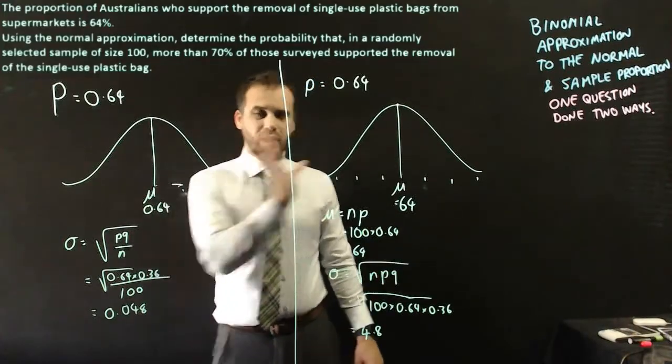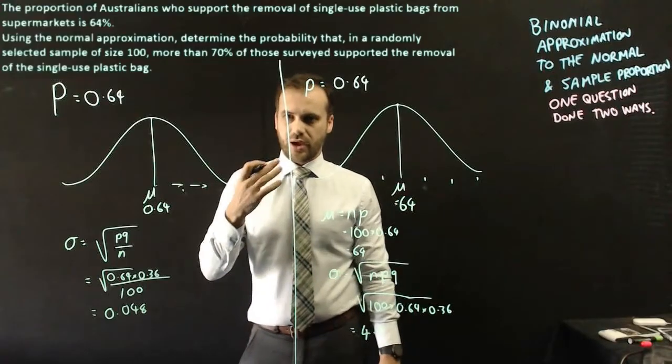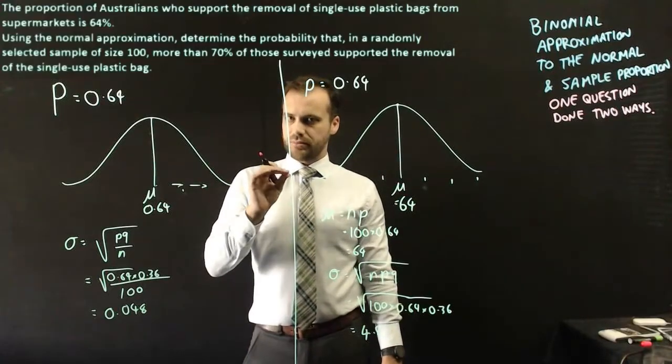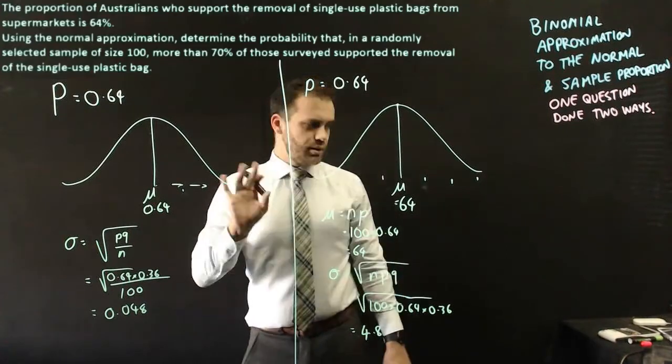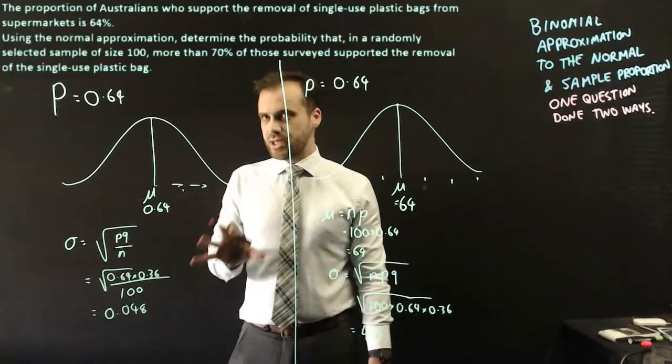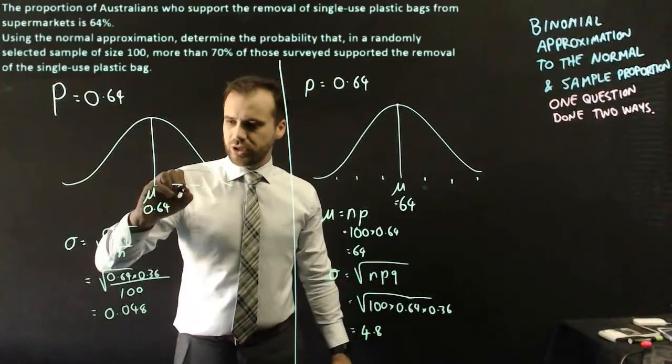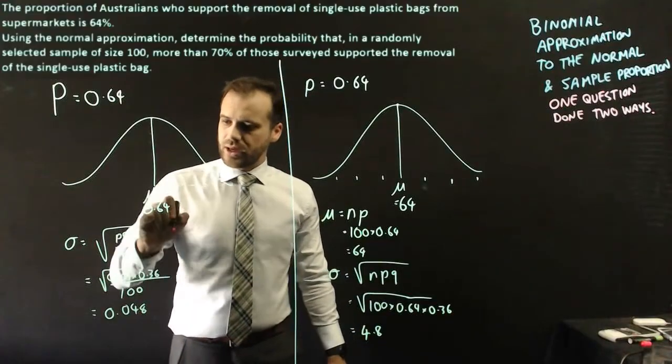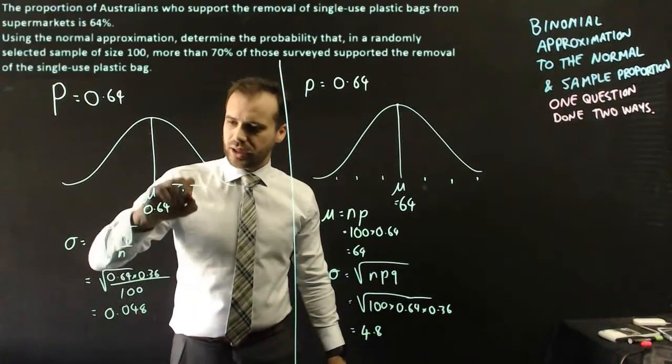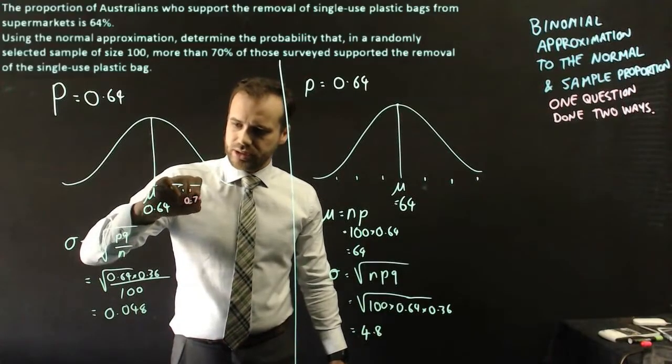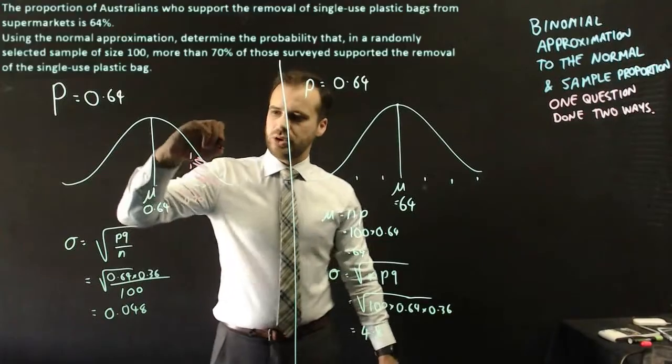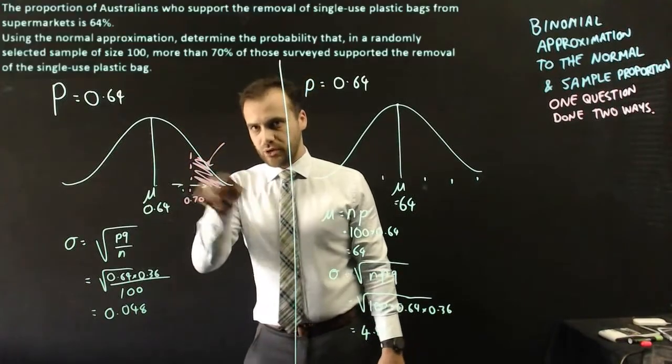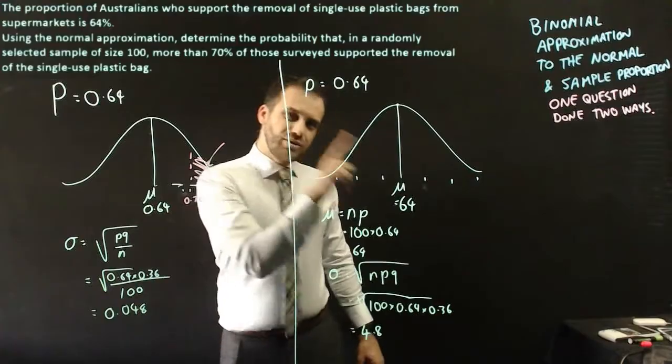Now, we're trying to find the probability that more than 70% of people approve of this, approve of removing the bags. In this one, it's relatively easy. We're trying to find the probability that the proportion is greater than 0.70. In other words, we're trying to find that area right there.